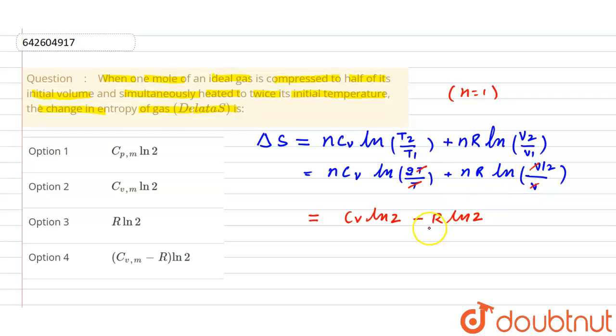take that 2 to the other side, then a negative sign will be there. Now take ln 2 as common, so it will be (Cv - R) ln 2.